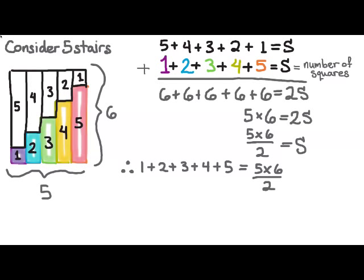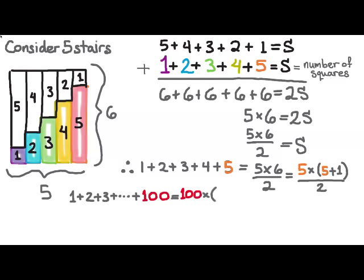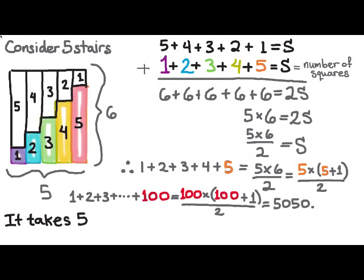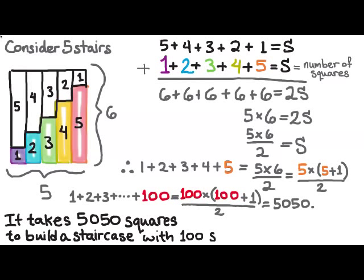Now we want to be able to generalize this to 100 stairs, so we have to figure out how the five on the left side of this equation corresponds to the five on the right. And so we can rewrite the right side of the equation like this, five times five plus one over two. And then that tells us how to do it for 100. So if we want to add up the first hundred numbers, we get 100 times 101 over two, which happens to be 5050. And so what we found is that it takes 5050 squares to build a staircase 100 stairs high.